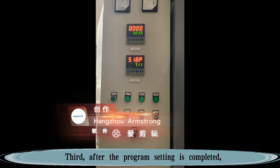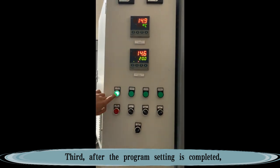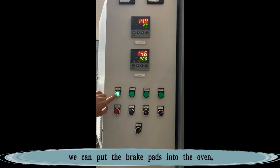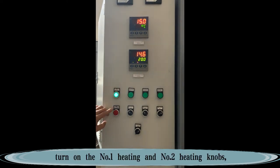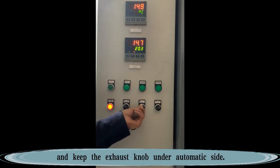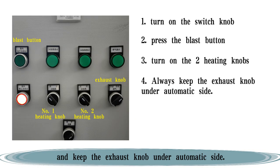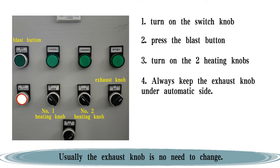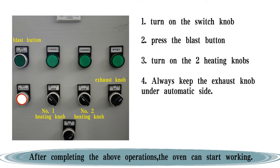After the program setting is completed, we can put the brake pads into the oven, close the oven door, press the blast button, turn on the No.1 heating and No.2 heating knobs, and keep the exhaust knob on the automatic side. Usually the exhaust knob is no need to change. After completing the above operations, the oven can start working.